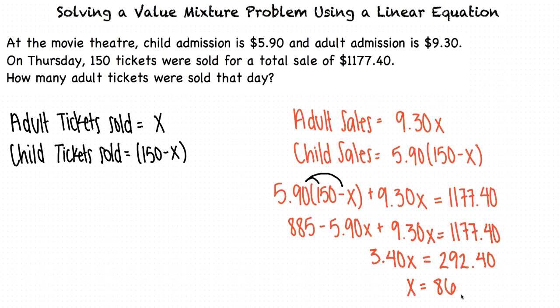Since we defined earlier that x equals the number of adult tickets sold, this answer tells us that 86 adult tickets were sold on Thursday.